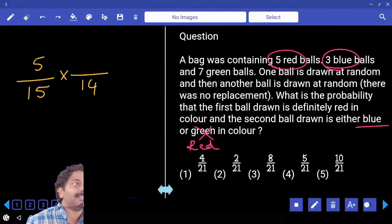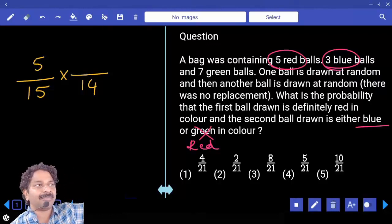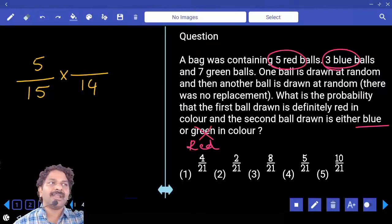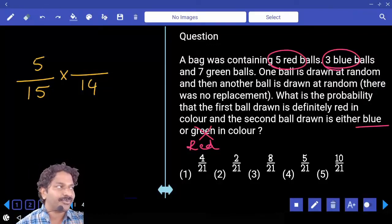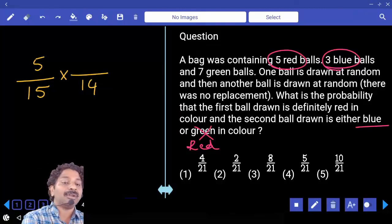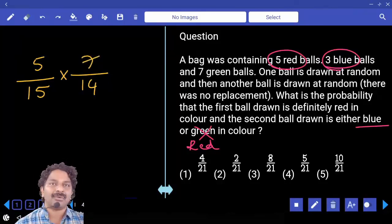Only 4 are there because out of 5 red already one ball was taken. So now there are only 4 red available. So 4 red, 3 blue. Out of those 7 we can pick only one.